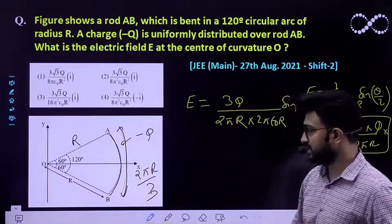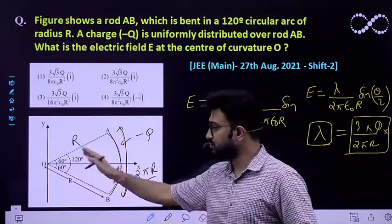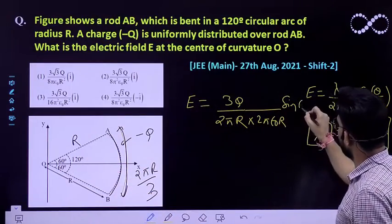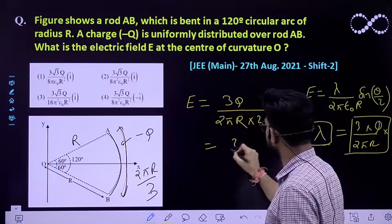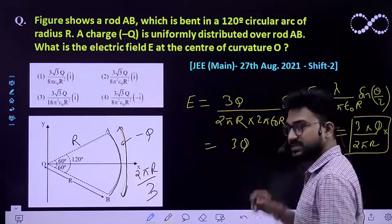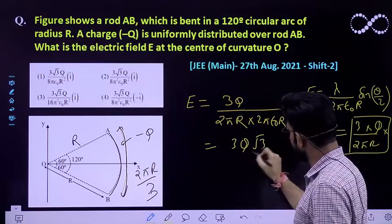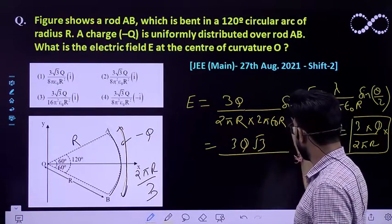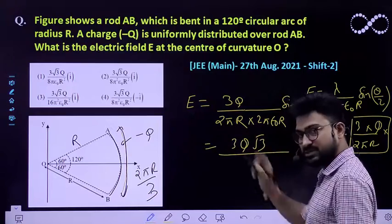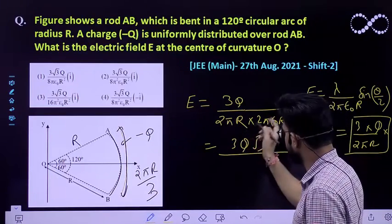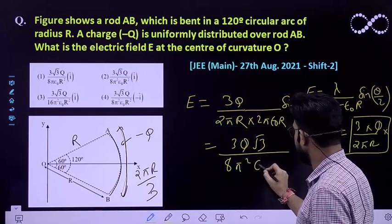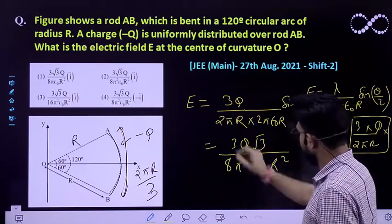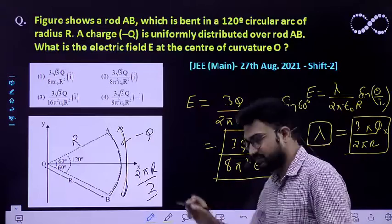Multiplied by sine theta by 2. What is the value of theta here? It is 120 degrees, so theta by 2 would be 60 degrees. Then eventually you will be getting 3Q. What is sine 60 degrees? It is root 3 by 2. So 2 would also be multiplied in this expression, so eventually you will be getting 3 root 3Q by 8 pi square epsilon naught R square.